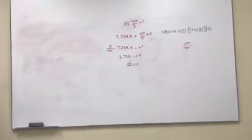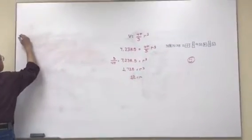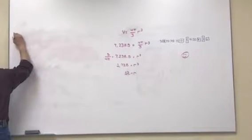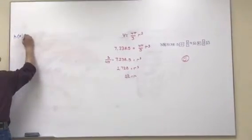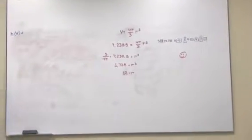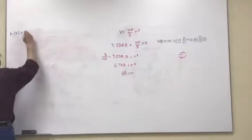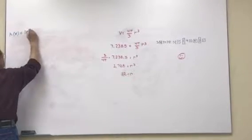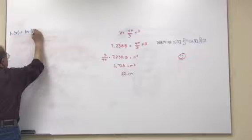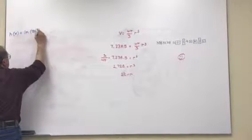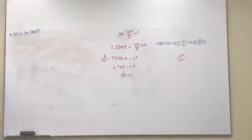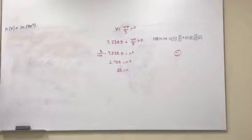Number 7. We have h of x equals natural log of 5x squared. So we want to do the derivative of this.